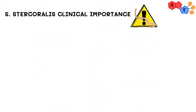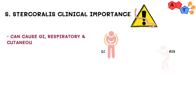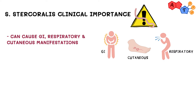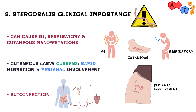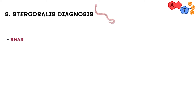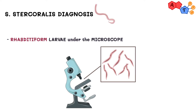For the clinical importance, Strongyloides stercoralis can go to different parts of the body, so the problems depend on where they go — they can affect the GI, respiratory, and cutaneous systems. This is similar to hookworm problems discussed previously. Strongyloides stercoralis can cause cutaneous larva currens, which has rapid migration and perianal involvement, as opposed to cutaneous larva migrans caused by hookworms. Lastly, Strongyloides stercoralis can cause auto-infection, as we have seen in its life cycle. For diagnosis, we look for rhabditiform larvae seen in feces under a microscope.